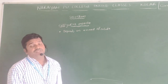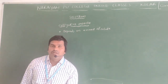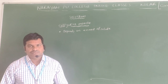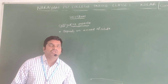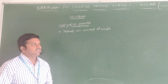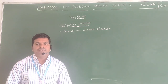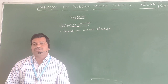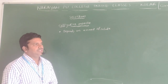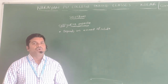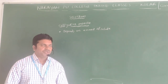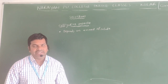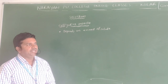The next concept we have is Colligative Properties. Generally, 'colligative' is a Latin word. It is composed of two words: 'co' and 'ligare'. Co means together, and ligare means to bind.